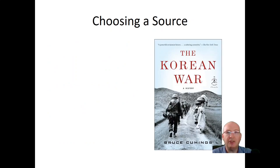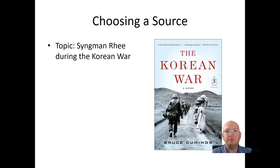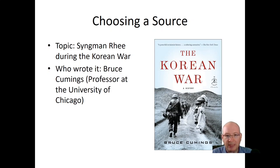For another example, let's say you're interested in the Korean War and what Syngman Rhee — the president of Korea — was doing during it. You find a book that might have good material on Syngman Rhee. Before looking at the content, think critically about who wrote it. The author is Bruce Cummings, a professor at the University of Chicago — which has a highly respected Korean studies program. This person most likely knows what he's talking about and has good credentials.